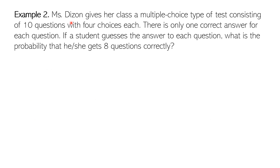Now for the second example: Ms. Dizon gives her class a multiple choice test consisting of 10 questions with 4 choices each. There is only one correct answer for each question — this is emphasized because some tests allow more than one correct answer, but here only one is correct. If a student guesses the answer to each question, what is the probability that he or she gets 8 questions correctly?